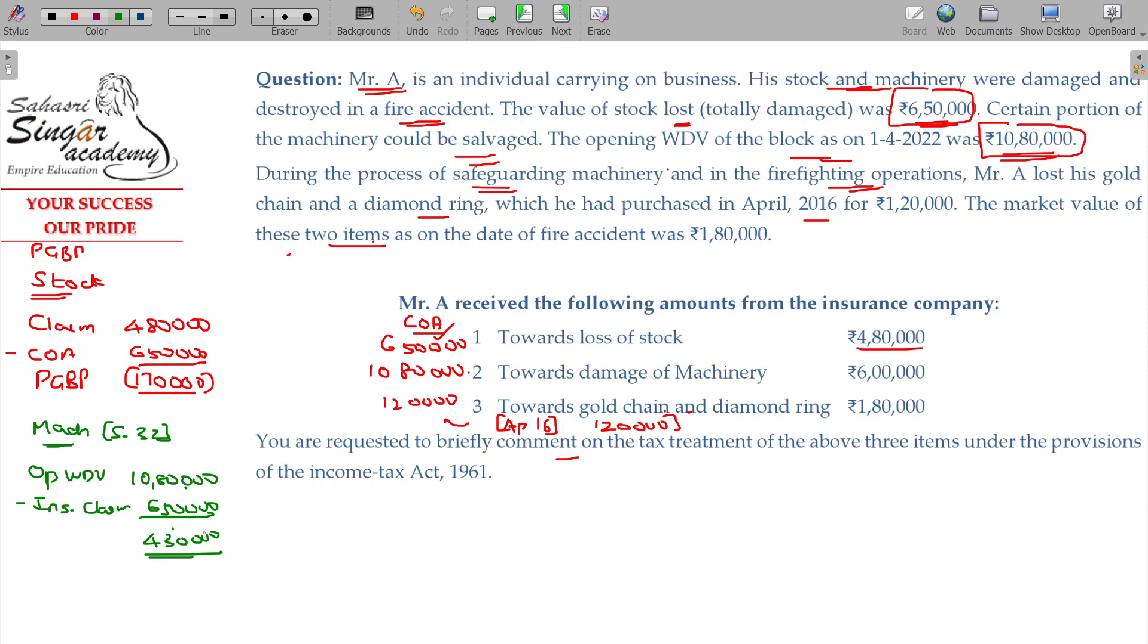This will be considered short-term capital gain. Okay. Under Section 50. Under Section 50. As the value of the asset being zero, sale consideration being insurance claim received 650,000 minus WDV of the block of assets plus any assets purchased in the block in that current year. The difference will be your short-term capital loss 4 lakhs 30.